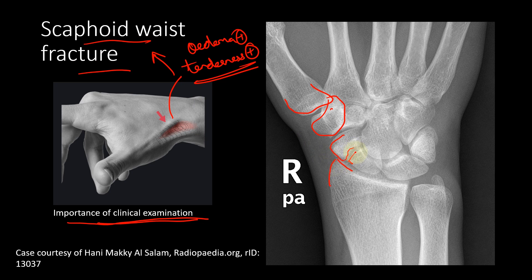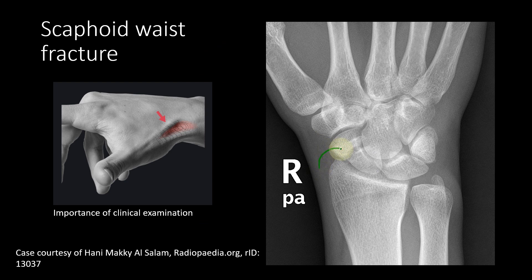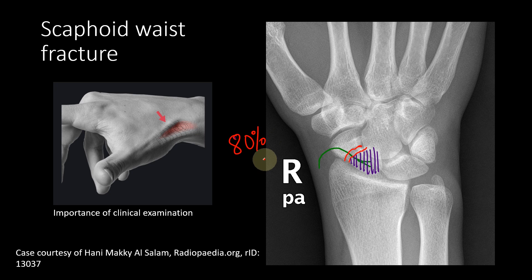That complication is avascular necrosis of the proximal fragment. The blood supply to the scaphoid comes from the distal fragment and travels toward the proximal fragment. If there is a fracture at the waist of the scaphoid, it disrupts this blood supply to the proximal fragment, and eventually the proximal fragment can undergo avascular necrosis.